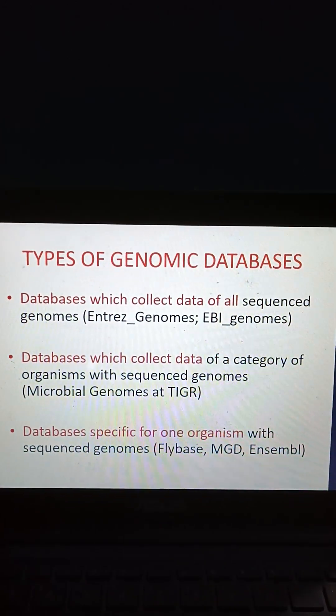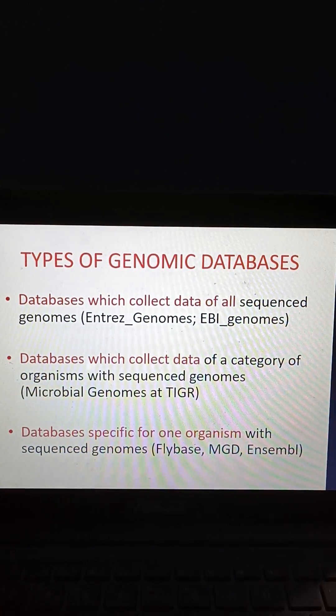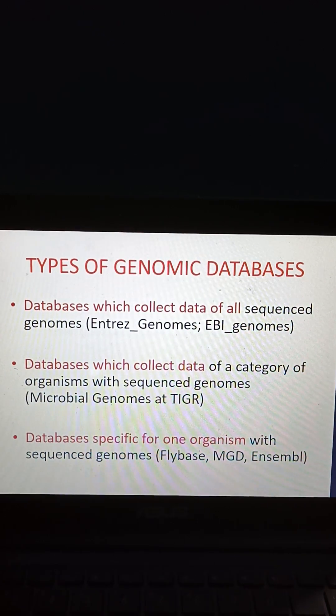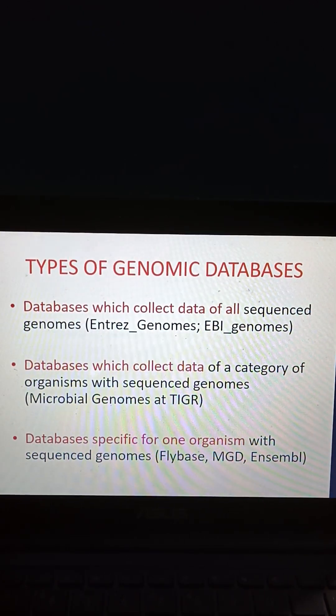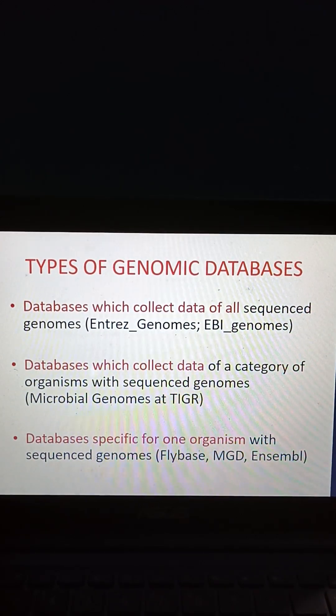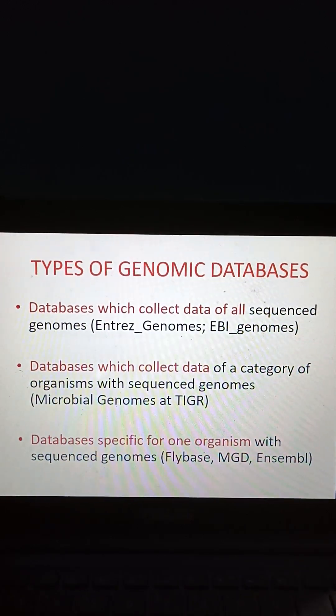Coming to types of genomic databases: databases which collect data of all sequenced genomes (Entrez Genomes, EBI Genomes), databases which collect data of a category of organisms with sequenced genomes (microbial genomes, TIGR), and databases specific for one organism with a sequenced genome (FlyBase, MGD, Ensembl). This picture shows the NCBI microbial genomes interface, and you can visit these sites for more knowledge.